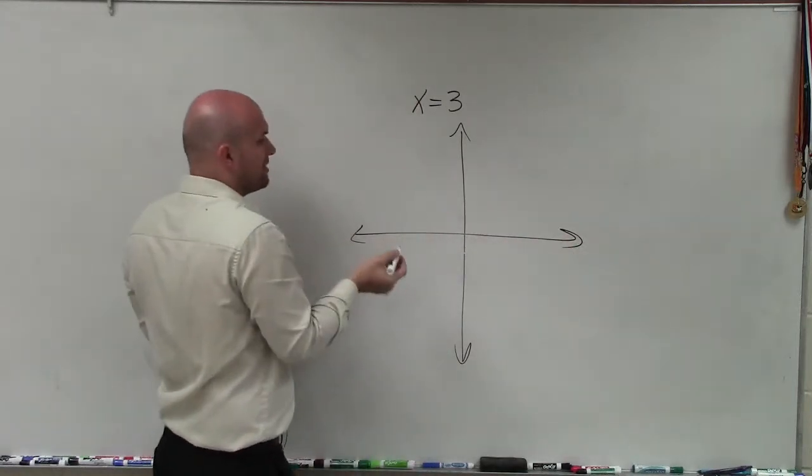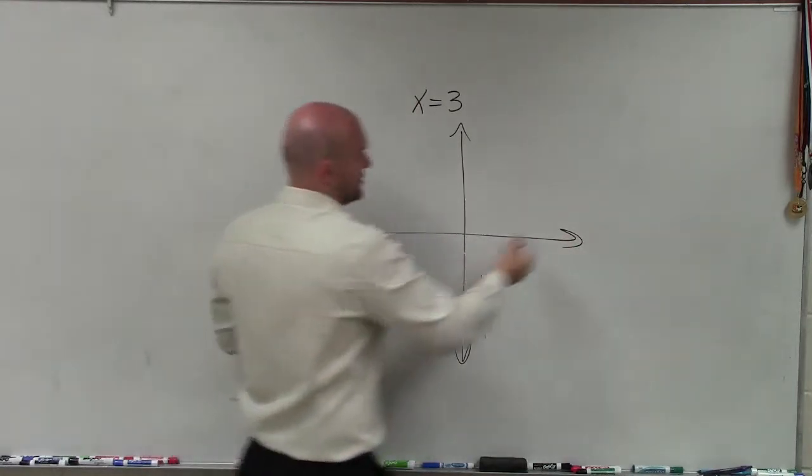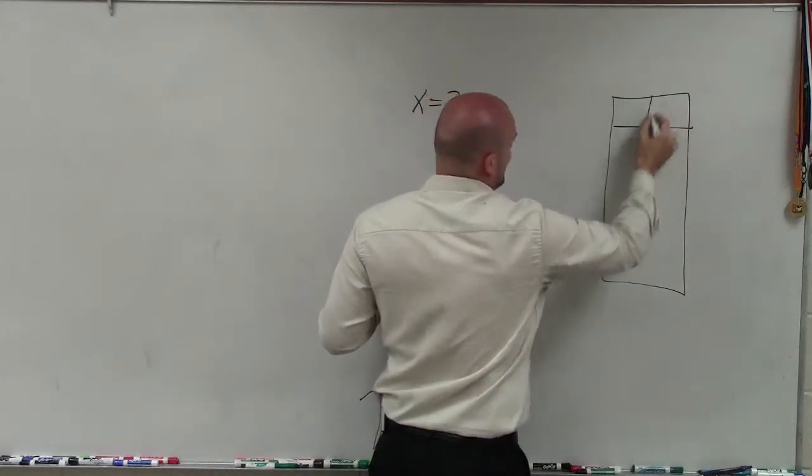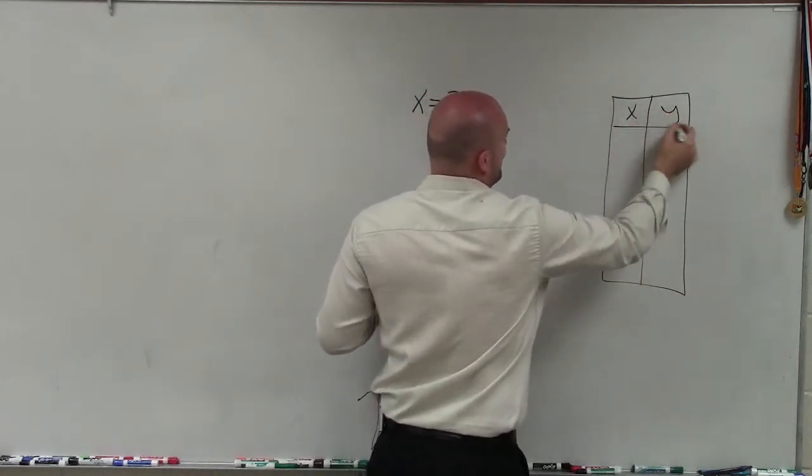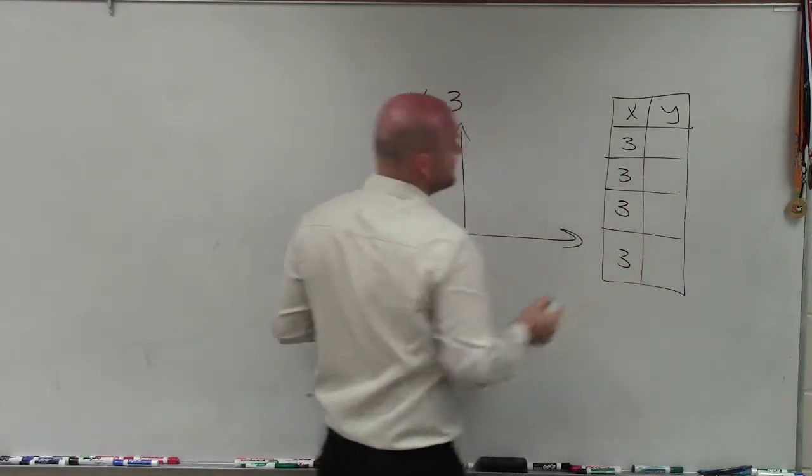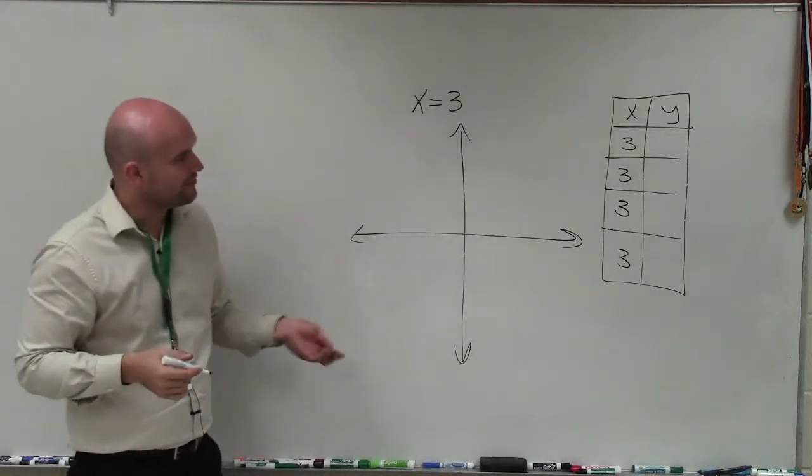And remember, for every coordinate point, we have an x-coordinate and a y-coordinate. So what's important about x equals 3 is what that tells us is no matter what my coordinate is, the value for x is always going to be 3. The value of x is never going to change from being 3.